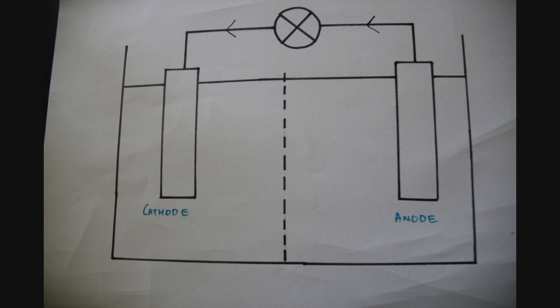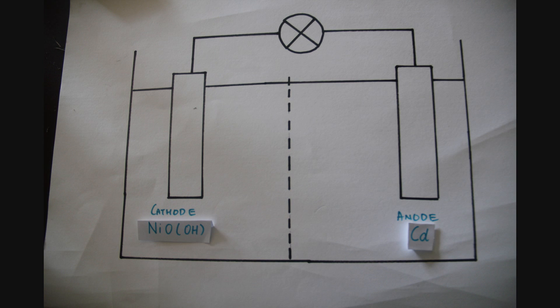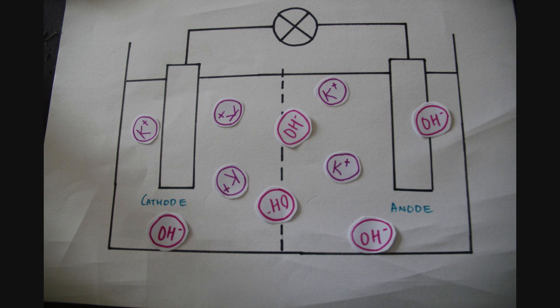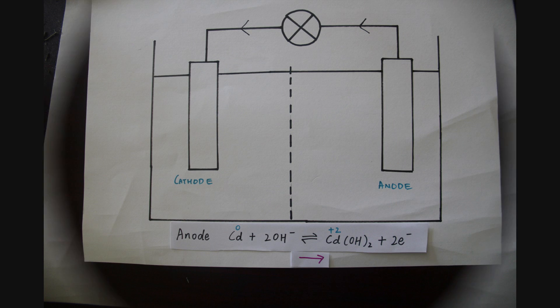In this case, we will look at a nickel-cadmium battery, where the anode is cadmium, the cathode is nickel oxide hydroxide, and the electrolyte is potassium hydroxide. At this time, the anode experiences an oxidation reaction, in which hydroxide ions from the electrolyte combine with the cadmium, producing cadmium hydroxide and releasing one or more electrons.